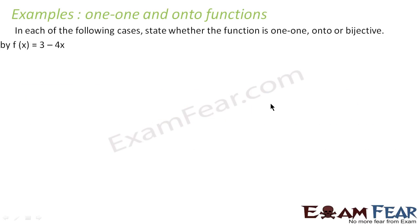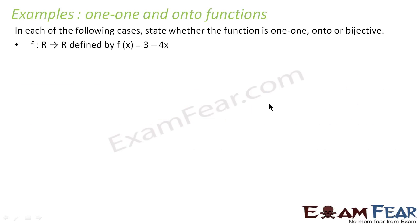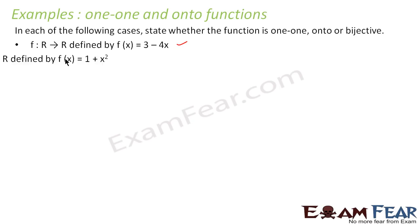Let's take one more example. In each of the following cases, we have to tell whether the function is one-to-one, onto, or bijective. First, the function is defined by f(x) = 3 − 4x from R to R, and second, from R to R, f(x) = 1 + x².